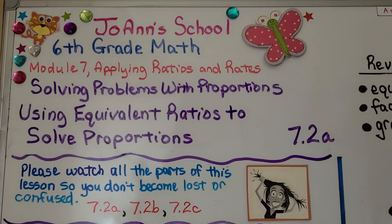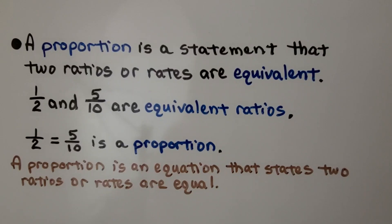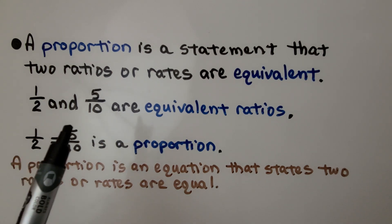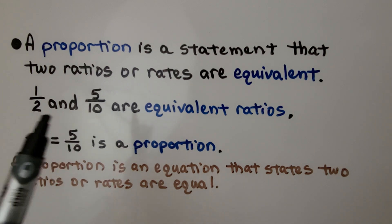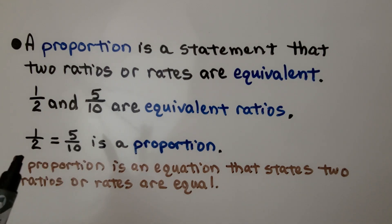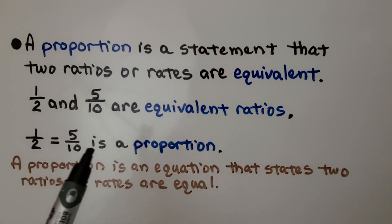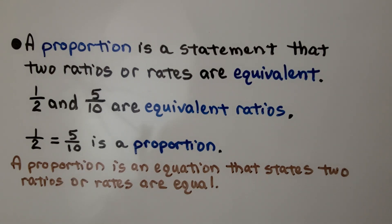Lesson 7.2a: Using Equivalent Ratios to Solve Proportions. A proportion is a statement that two ratios or rates are equivalent. One half and five-tenths are equivalent ratios, so one half equals five-tenths is a proportion. A proportion is an equation that states two ratios or rates are equal.